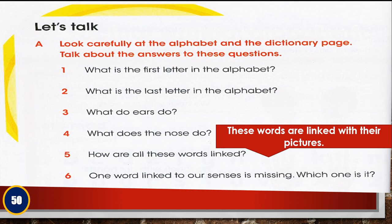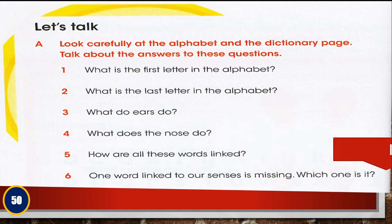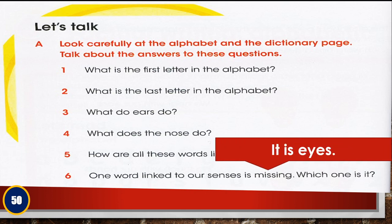Number six: one word linked to our senses is missing. As we know, we have five senses but the dictionary page only talked about four. Which one is missing? It is eyes. The word linked to our senses that is missing is eyes. Please write: it is eyes.